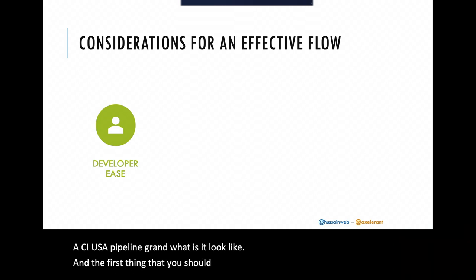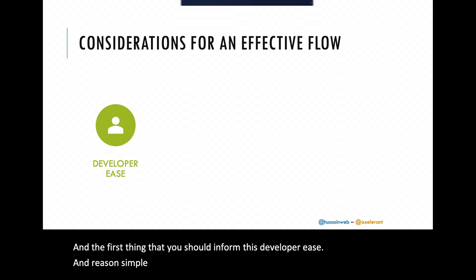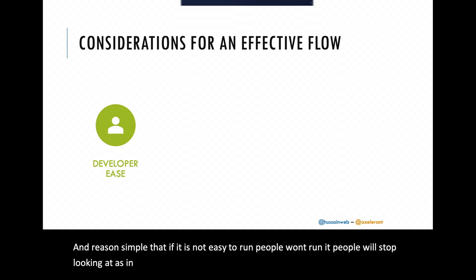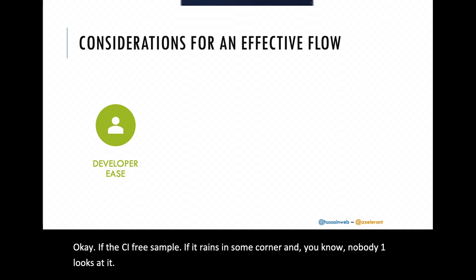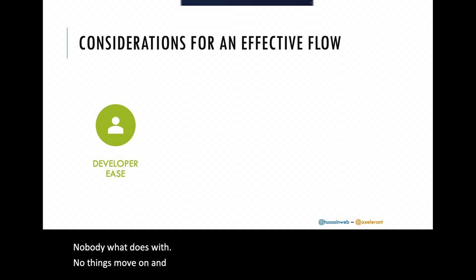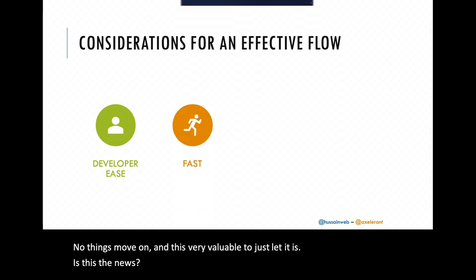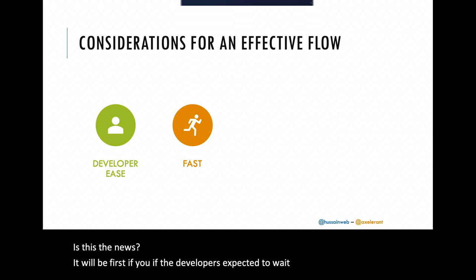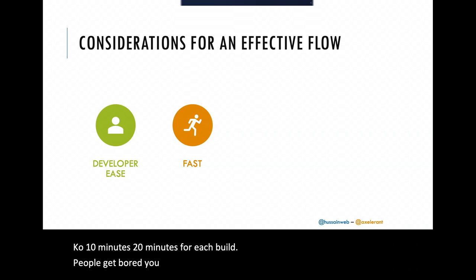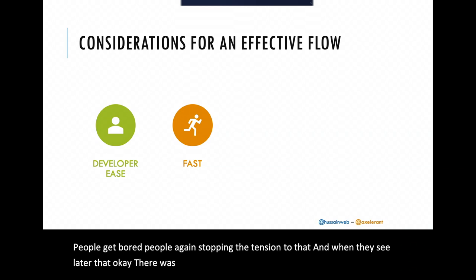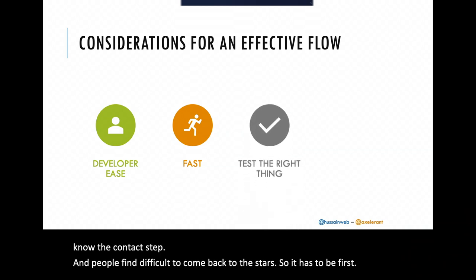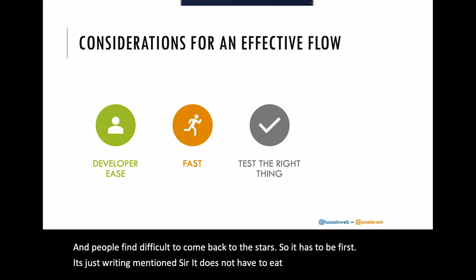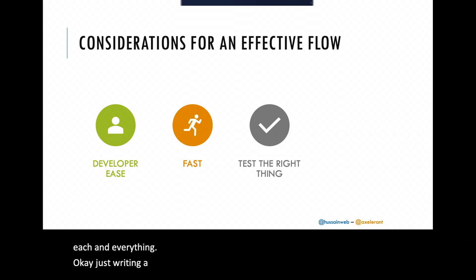When thinking about what a CI pipeline flow should look like, the first thing to aim for is developer ease — if it's not easy to run, people won't run it. I've seen CI systems just sit unused in a corner while the team moves on. It should also be fast — if developers wait 10–20 minutes per build, people get bored and stop paying attention. By the time an error surfaces, they've already moved on and context-switching back is difficult.